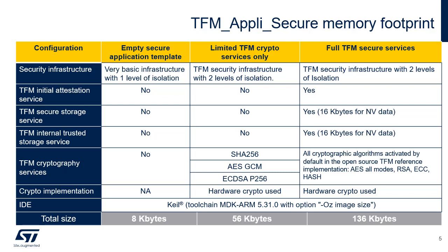This table indicates the size of the TFM secure application. The secure application provides secure services that can be used by the non-secure application, including configuration of the security architecture with isolation of different domains and secure API mechanisms, and providing secure services needed by the non-secure user application. The secure application binary is encapsulated in a firmware image which contains metadata used in the context of secure boot or secure firmware update functions. This table describes three examples: an empty secure application template, limited TFM crypto services only, and full TFM secure services.